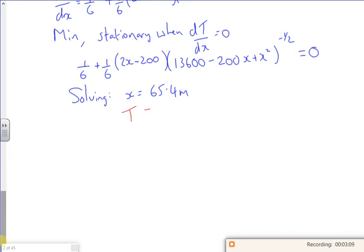It gives me a time of 34.0 seconds. So I'll run 65.4 metres along the path from A to B, and then like a straight direct path from that point straight across the grass there.